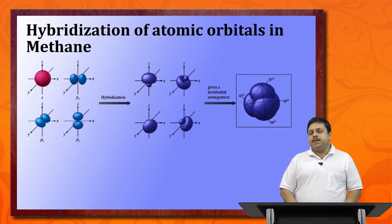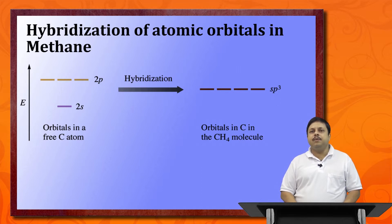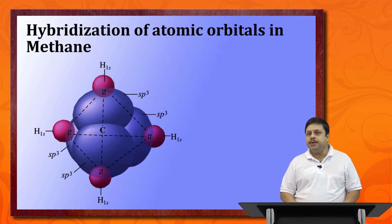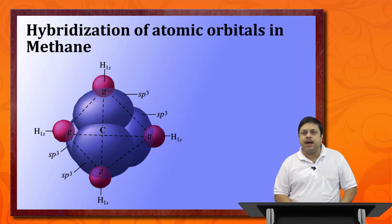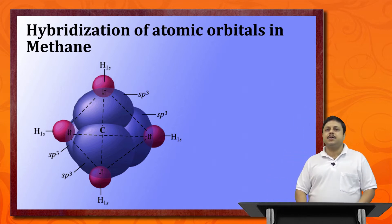Just before hybridization, the 2s and 2p orbitals are separated by a very small amount of energy — they are energetically proximate — so hybridization does not require a high energy input. Once hybridized, all four orbitals assume the same energy value. These four sp3 hybrid orbitals then each overlap with one hydrogen atom to form the four carbon–hydrogen bonds in methane.